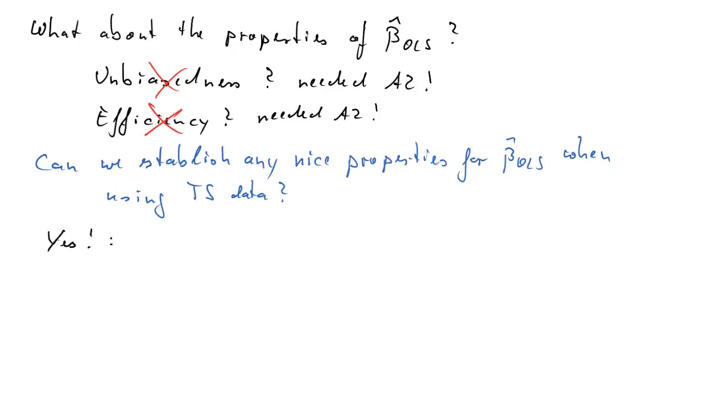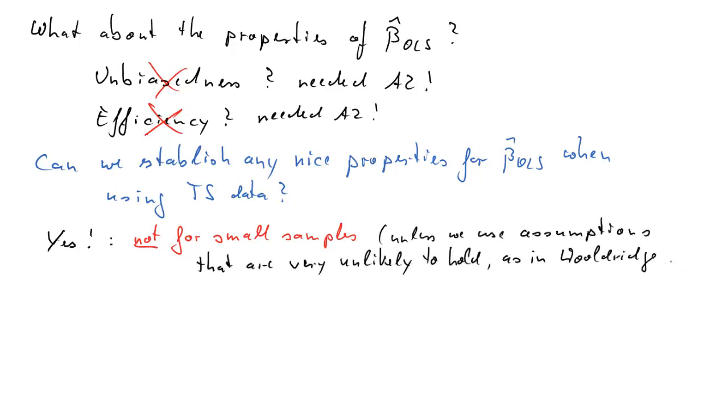However, we will not be able to establish any nice properties for small samples unless we make assumptions, basically, that the data are iid again. That's what Wooldridge does in his chapter 10. Then you can basically establish the same results as previously. But that's not very realistic for time series data. However, even if we don't make that assumption, even if we allow for realistic time series assumptions, meaning that observations are dependent on each other, we can establish nice properties for large samples asymptotically. And that is what Wooldridge does in chapter 11.